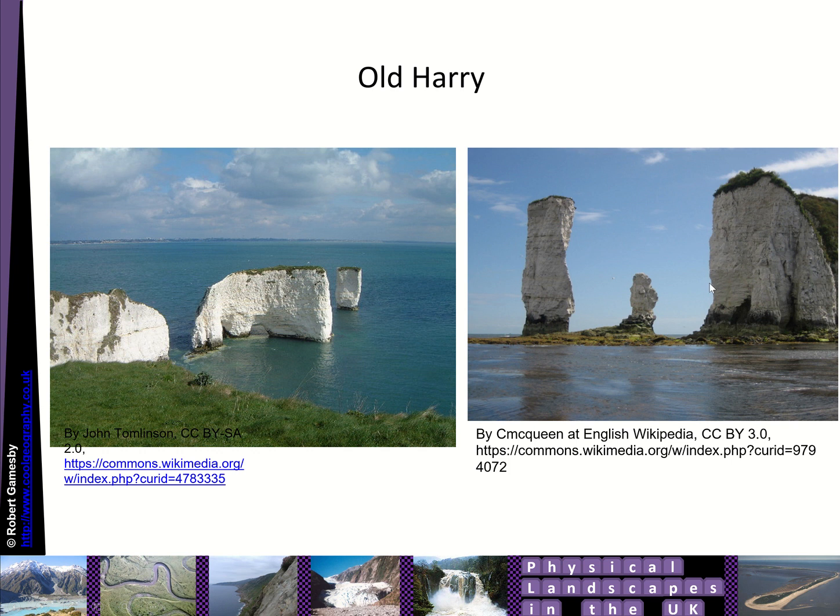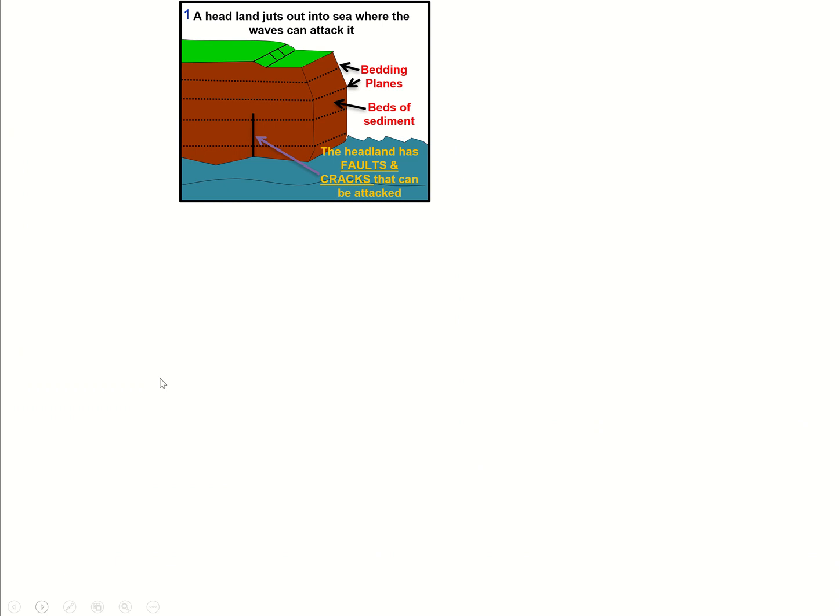Made up of layers of chalk, vertical column there with horizontal layers of chalk and flint. This would have previously been connected to the coastline as well. You can see here on this image a cave down here and an arch. So that's what we're looking at, how they are created.